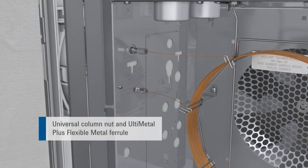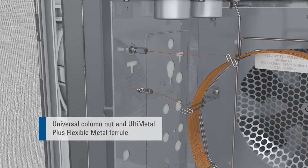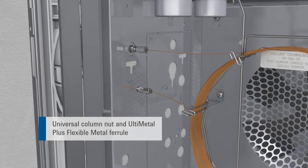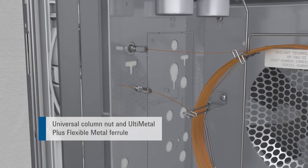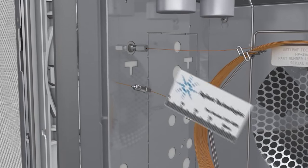Thread the column through the nut and flexible metal ferrule. A septum is not needed to mark the required length of column since the flexible metal ferrules permanently grip the column when pre-swaged.